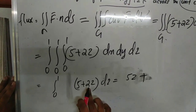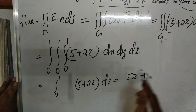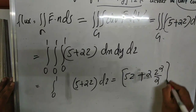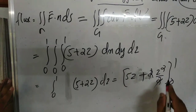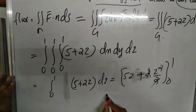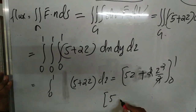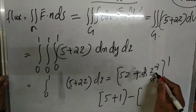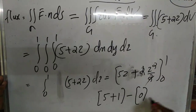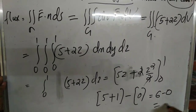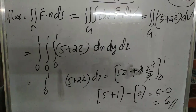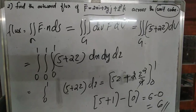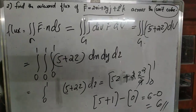Now we integrate (5 + 2z) with respect to z: that gives 5z + z²/2, evaluated from 0 to 1. The 2 in the numerator and denominator cancel, giving z² evaluated within the limit 0 to 1. At upper limit 1: 5(1) + 1² = 5 + 1 = 6. At lower limit 0: 0. So 6 minus 0 equals 6. The answer is 6.